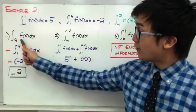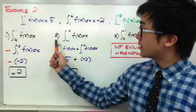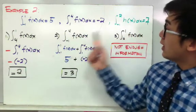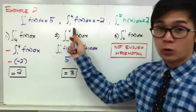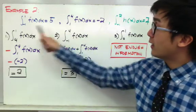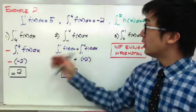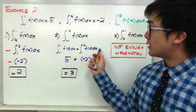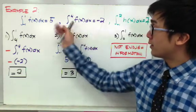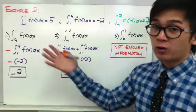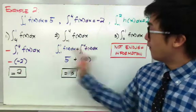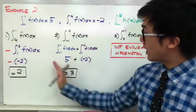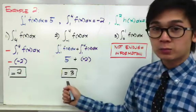For the second problem, we need to evaluate the integral of f(x) dx from negative 1 to 4. There is no single given integral with that interval; however, since we have integrals from negative 1 to 1 and from 1 to 4, we can combine them using the additive interval property. So f(x) dx from negative 1 to 1 added to f(x) dx from 1 to 4 equals the integral from negative 1 to 4. Since those values are 5 and negative 2 respectively, the result is positive 3.